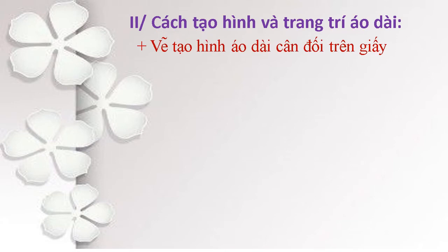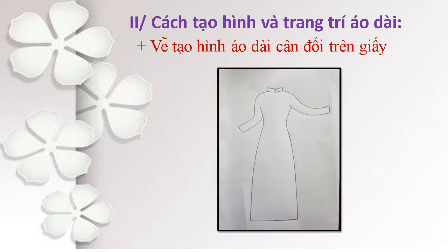Bước đầu tiên, chúng ta sẽ tạo hình áo dài cân đối trên tờ giấy như hình cô đã vẽ cho các bạn thấy cách bố cục trên một tờ giấy. Chúng ta vẽ đầy đủ các bộ phận của chiếc áo dài như là cổ, hai tay, thân, tà trước. Bạn nào thích vẽ thêm tà sau thì vẫn có thể vẽ thêm cái tà sau bay lên.